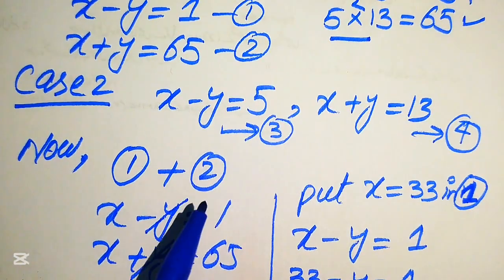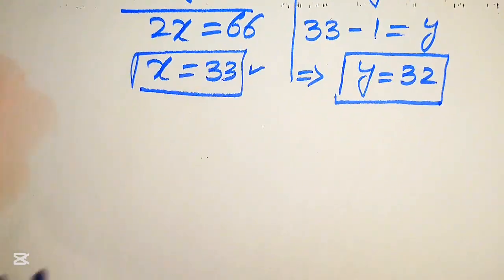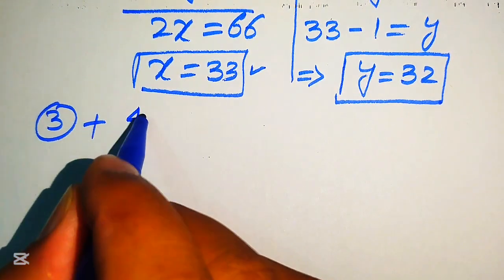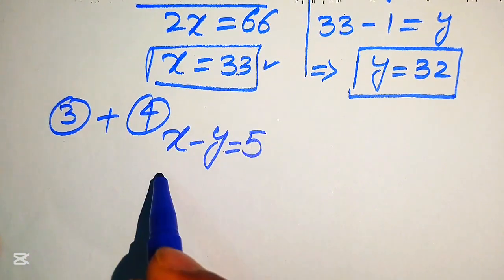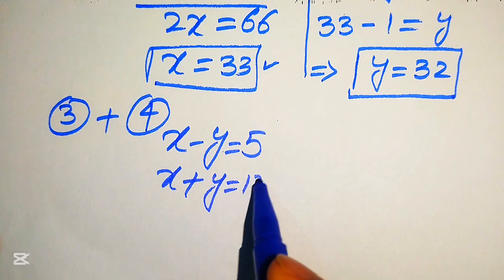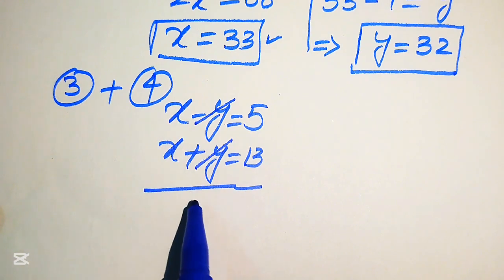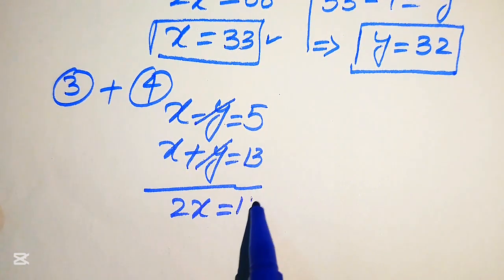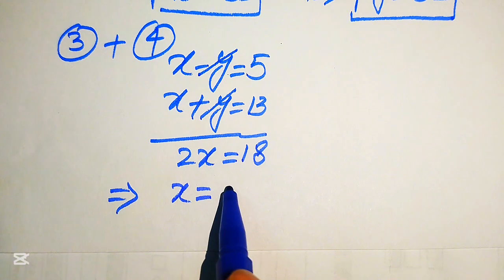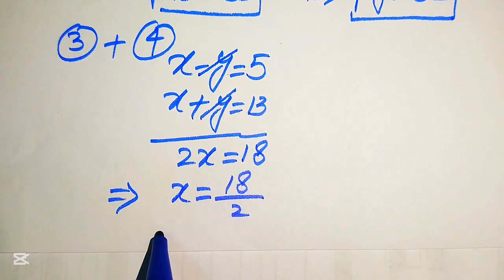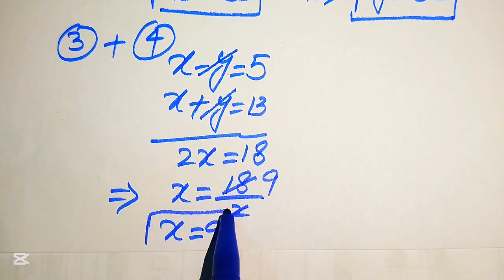Now we move to Case 2. We add equation 3 (x minus y equals 5) and equation 4 (x plus y equals 13). The y terms cancel, giving 2x equals 18, so x equals 9.